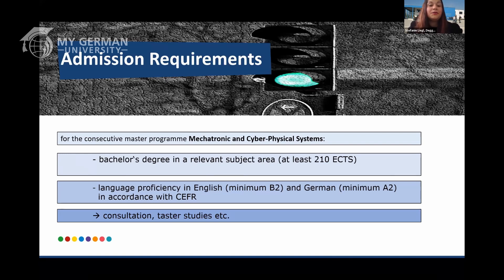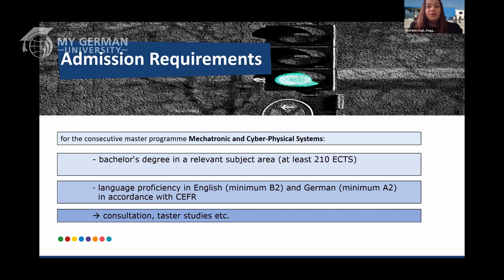For language requirements, you need a minimum of B2 in English and a minimum of A2 in German. German language courses on campus are mandatory, and once you reach A2 level on campus the mandatory requirement is fulfilled. If you wish to continue improving your German, you can study up to B1, B2, or even C level.